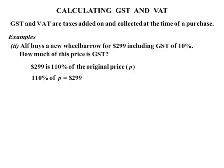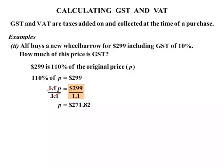What we know is that 110% of P equals $299. We can rewrite that as 1.1P equals $299. To find P, we need to get P by itself. At the moment it's being multiplied by 1.1, so let's divide both sides by 1.1. On the left hand side they will cancel, giving us P by itself. $299 divided by 1.1 works out to be $271.82.